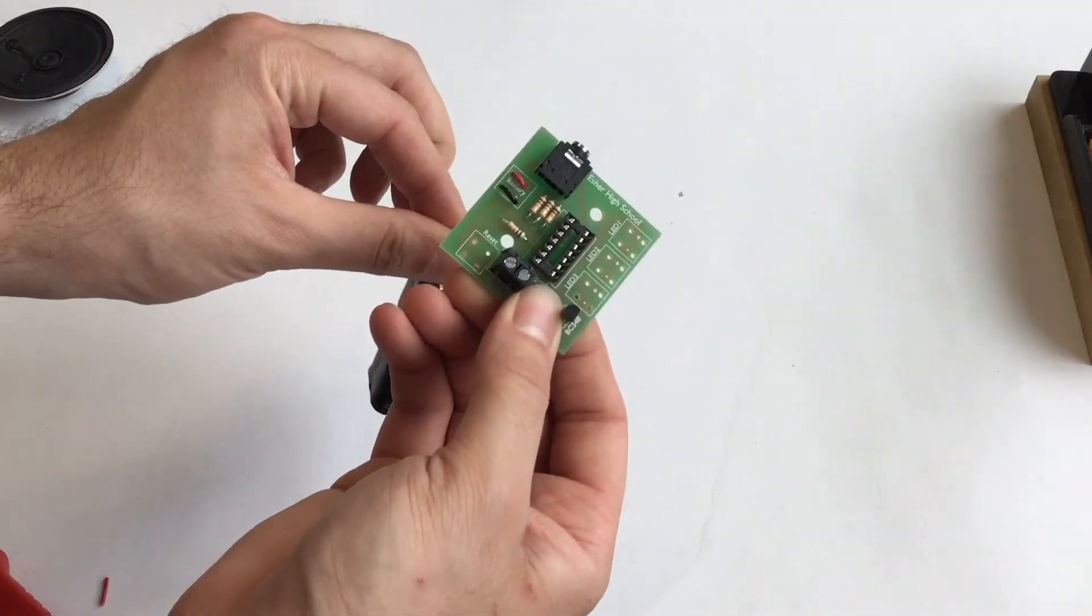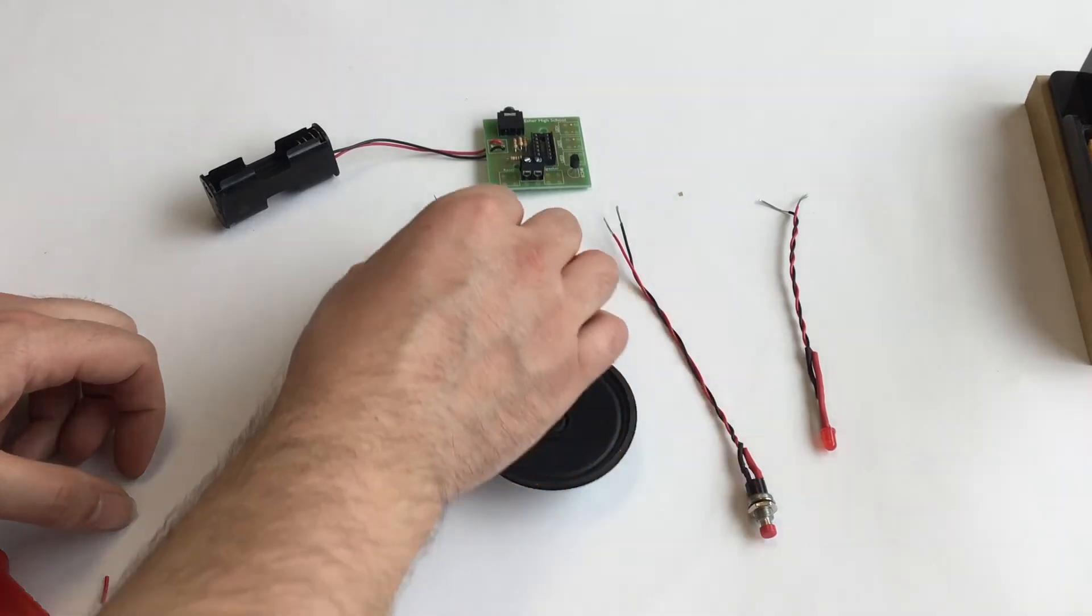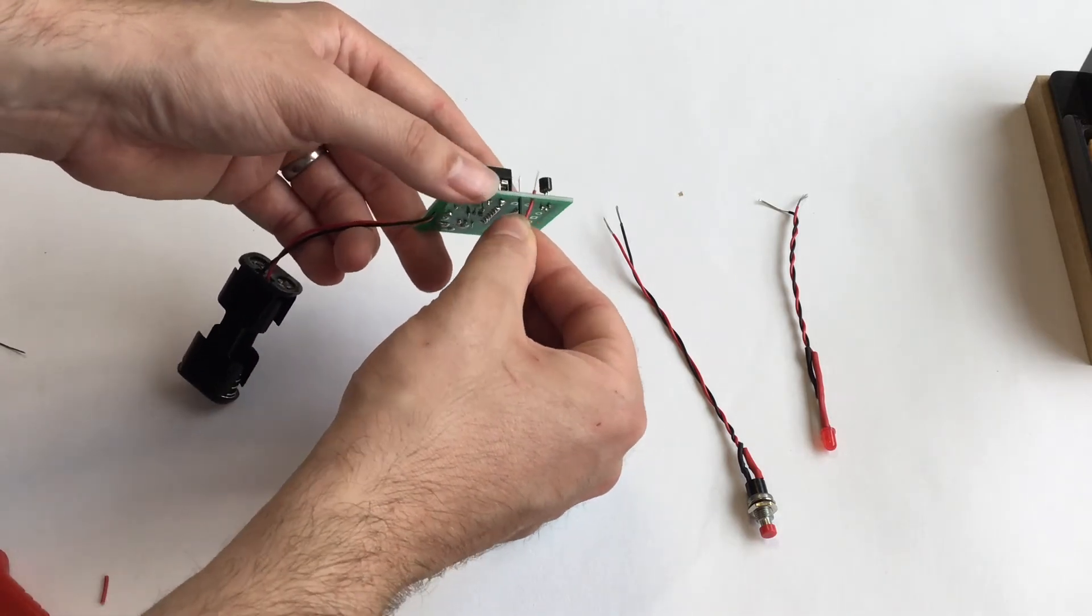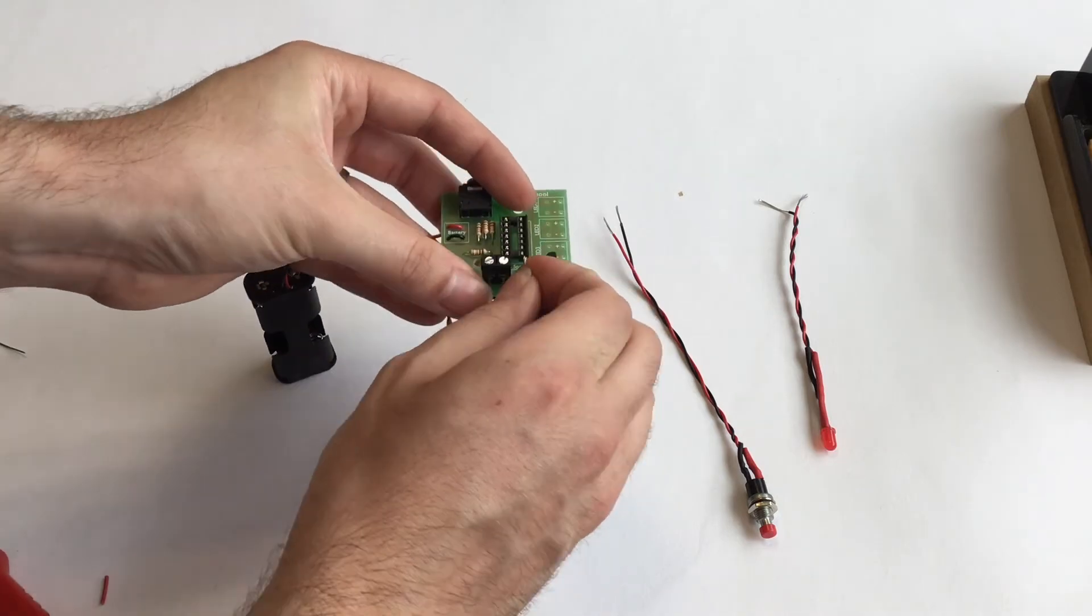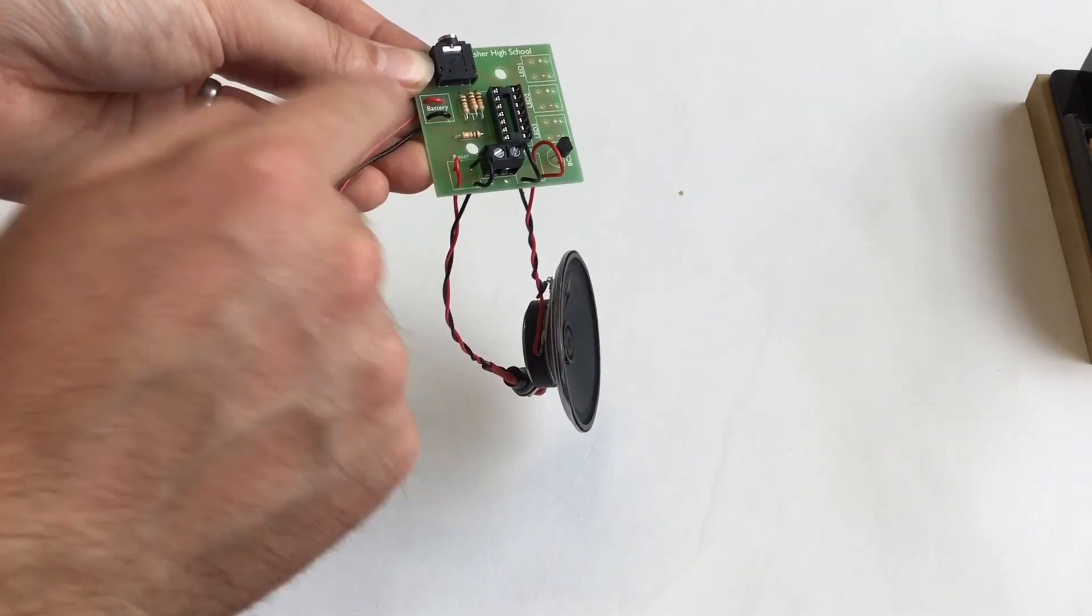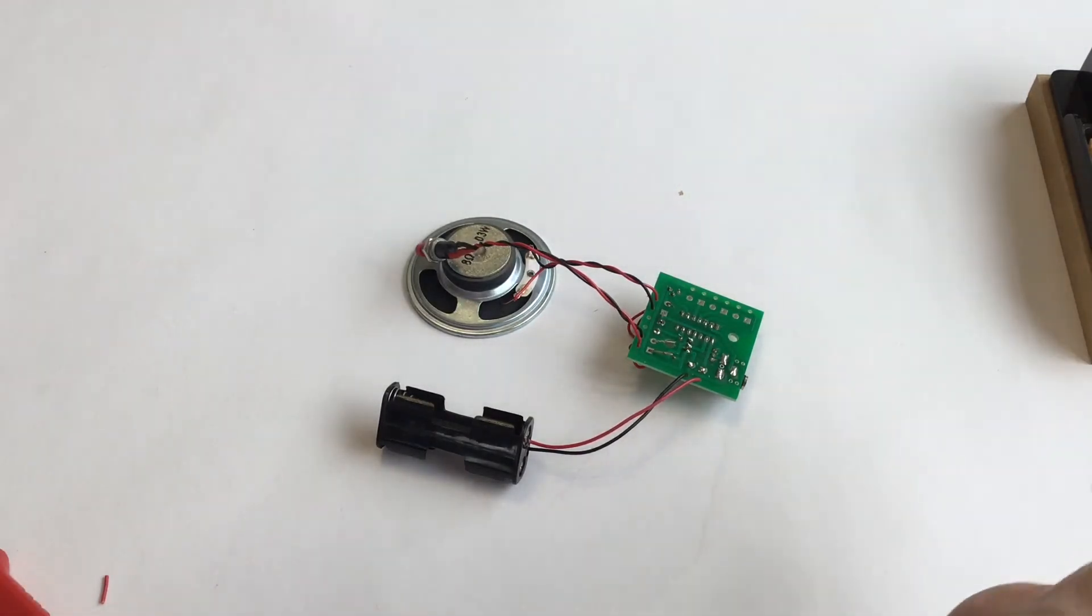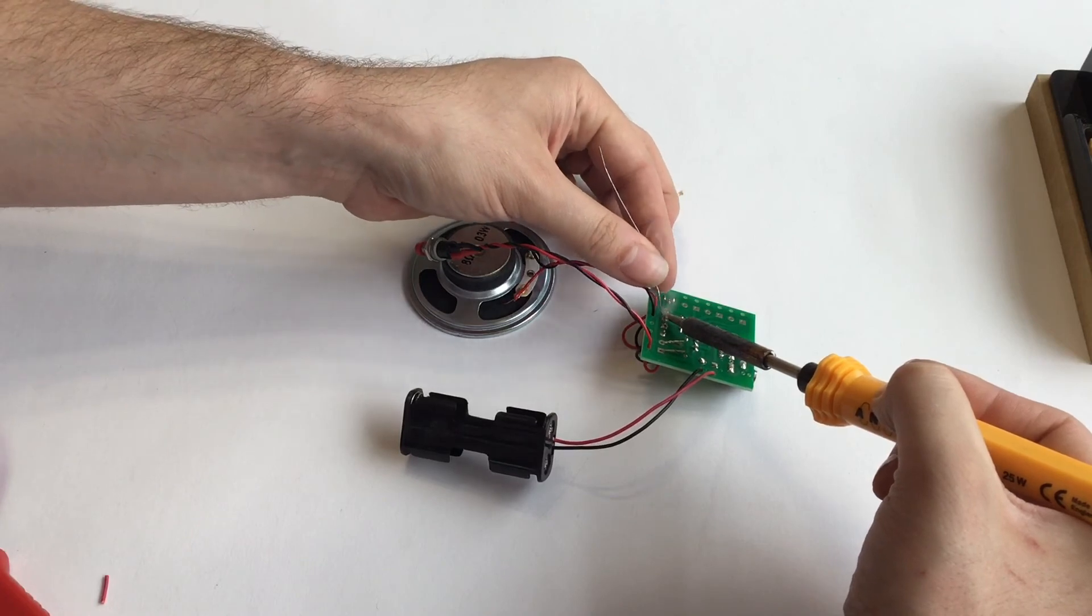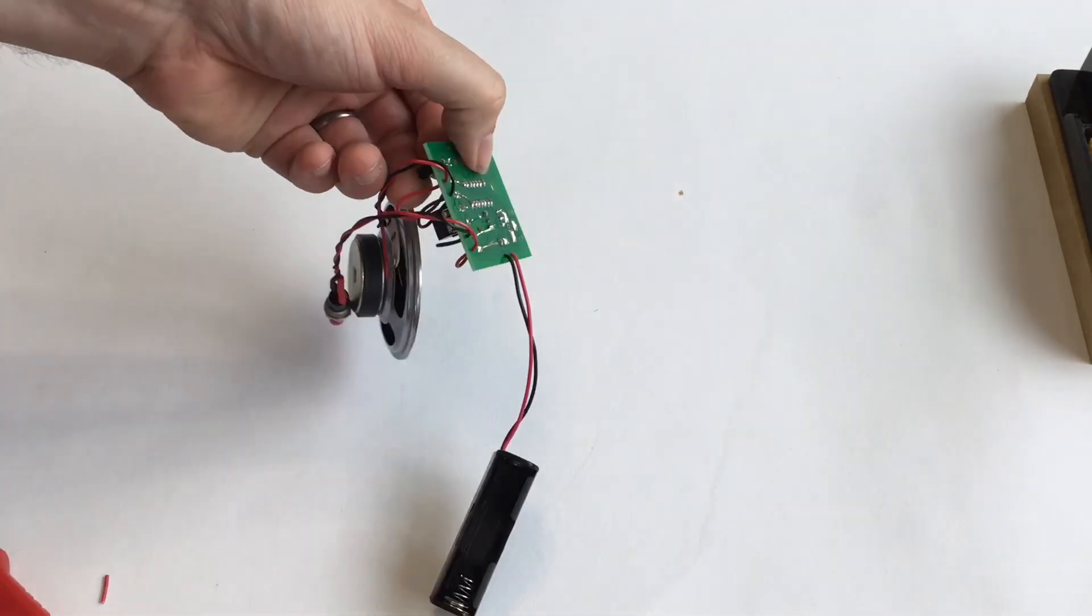Once soldered, the speaker, reset switch and LEDs will all need soldering on in the same way as the battery box. Note that it does not matter which way around the speaker goes but you should still use the strain relief holes. Push from behind first and then loop the wire over into the right hole. Here I have fed the reset switch and the speaker through the strain relief holes into the PCB. On the reverse I can then solder those in place and then the excess wire can be removed.